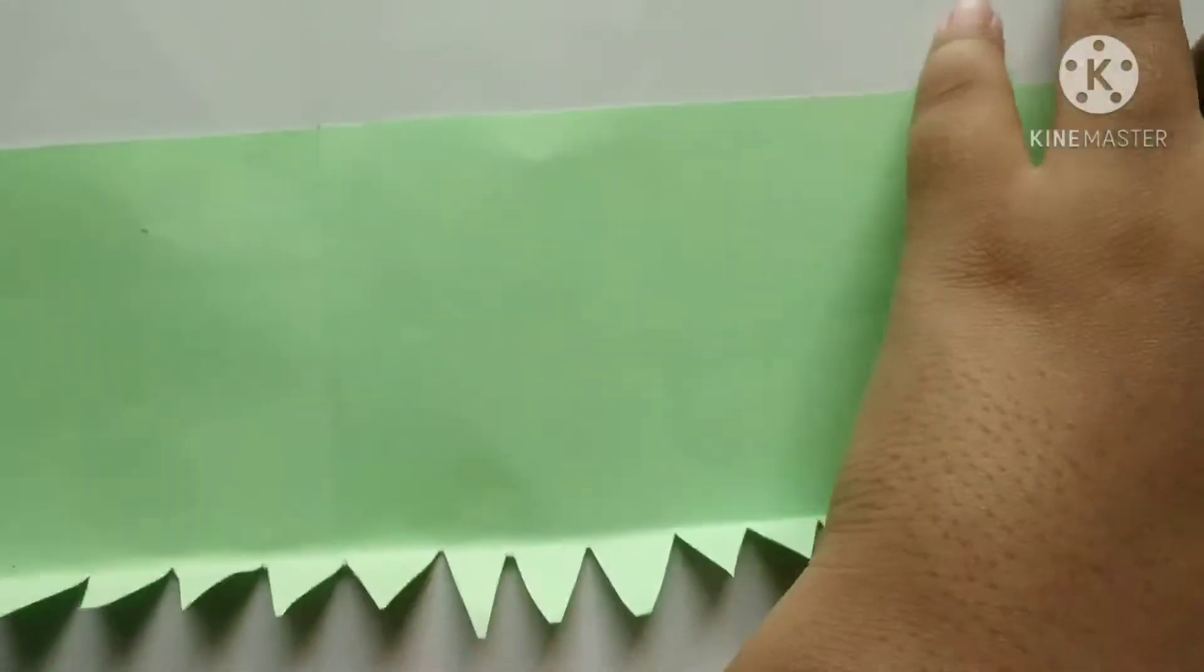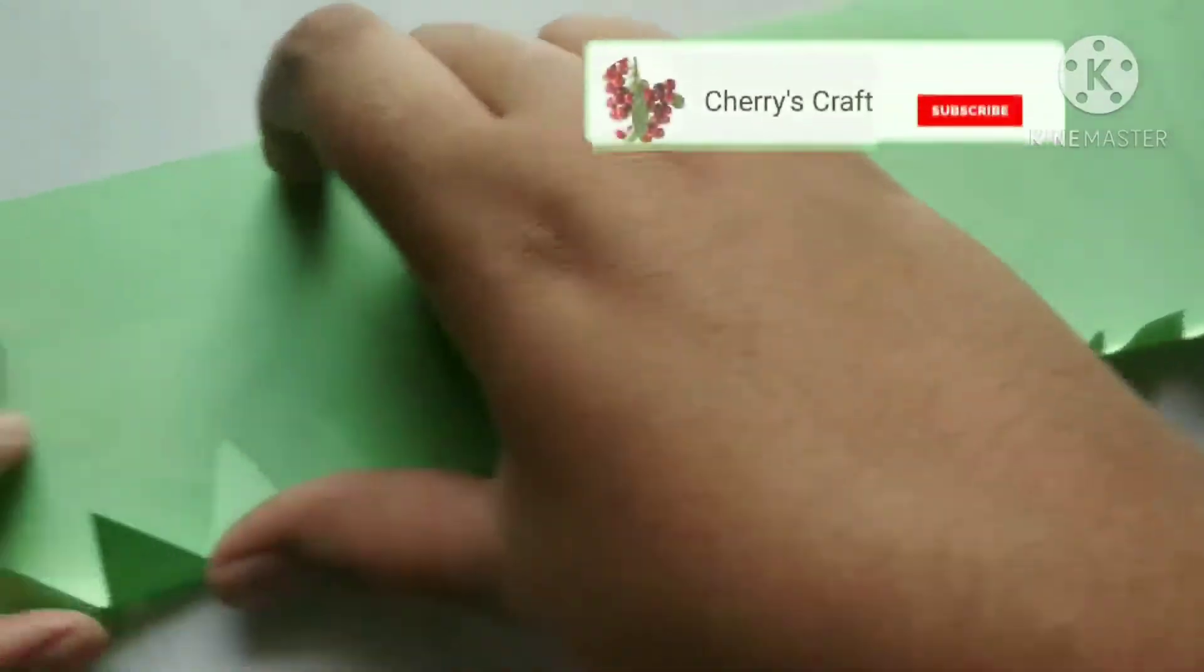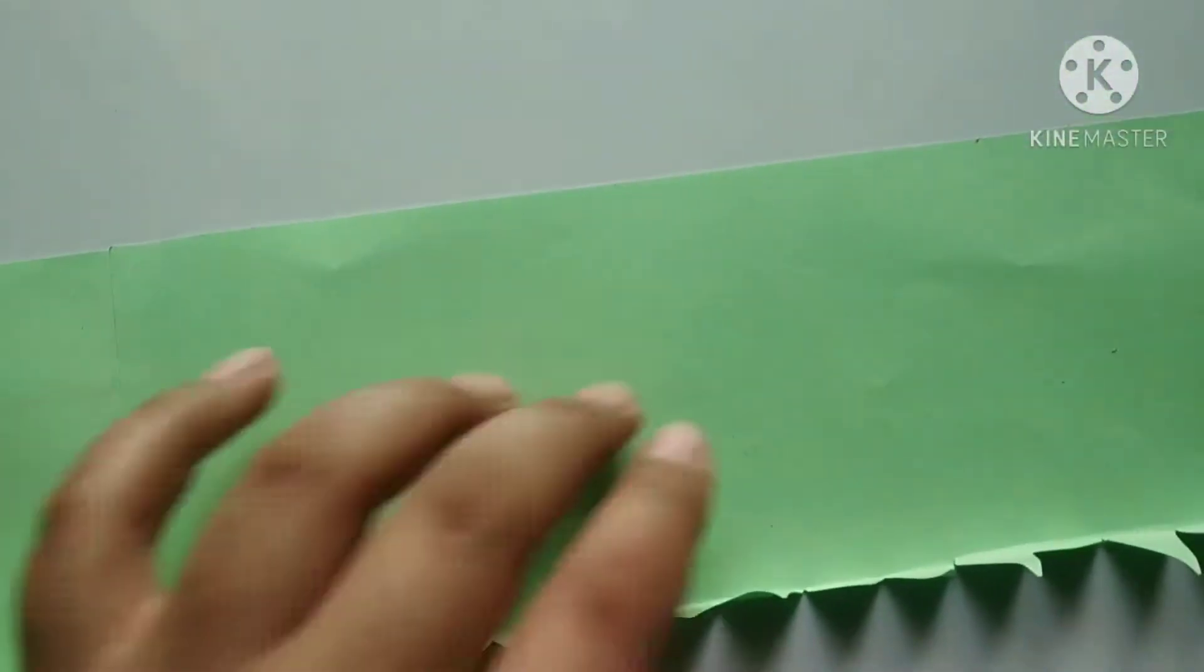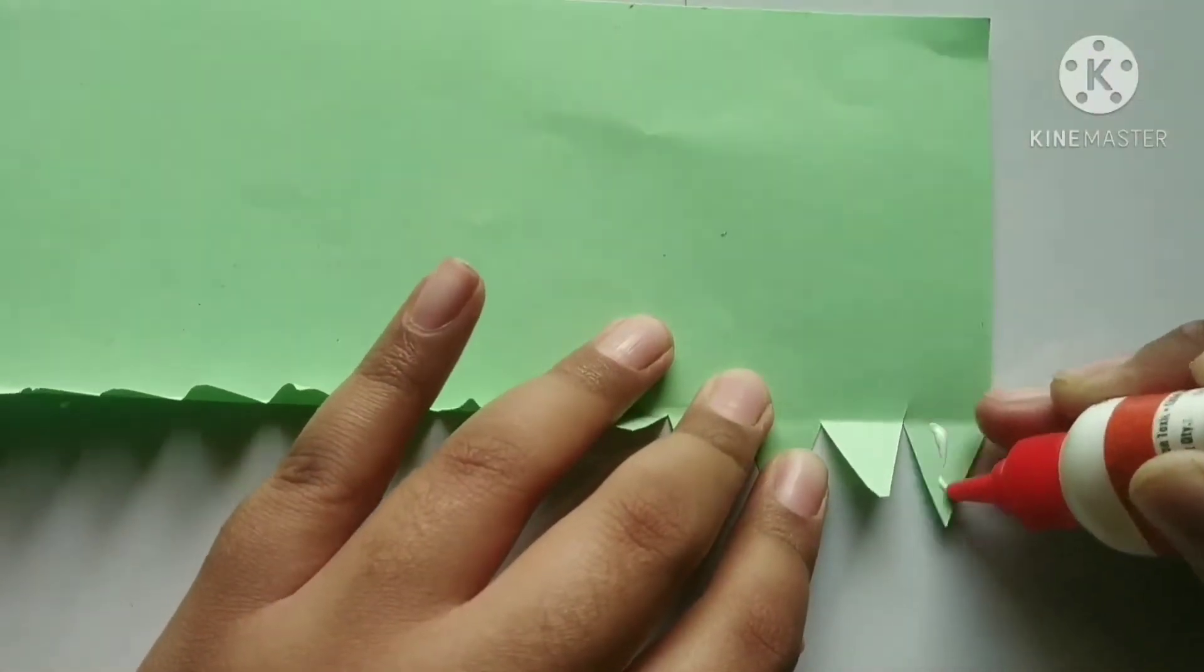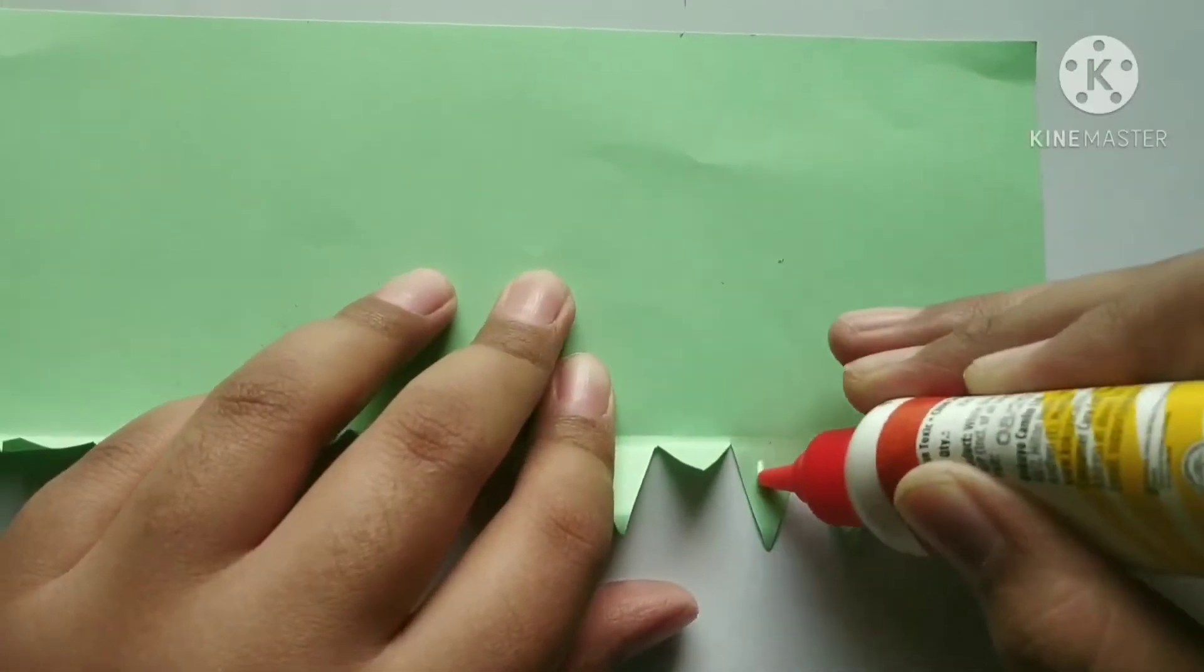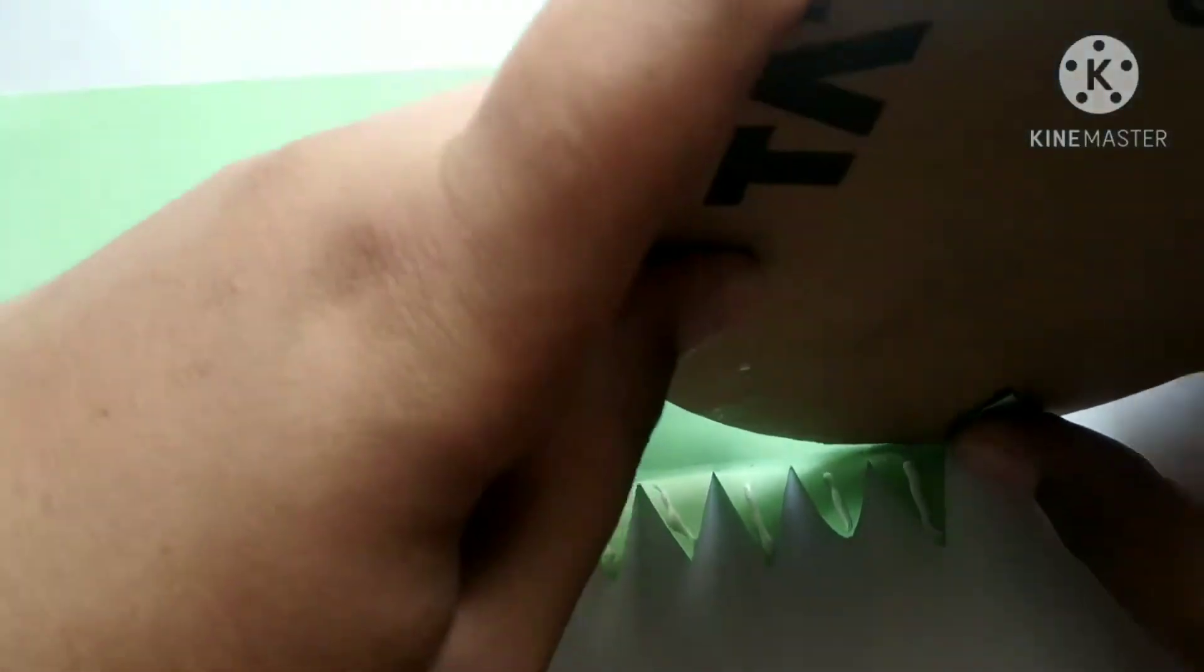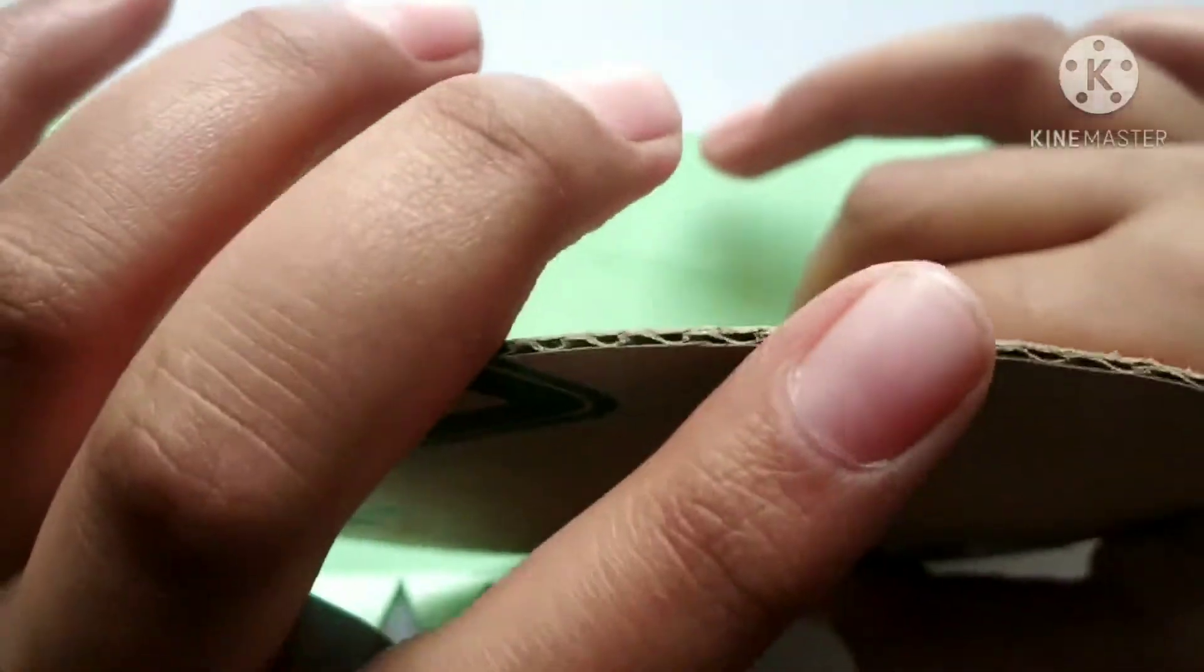Friends, now we need to fold this up and keep them straight. Now we need to apply glue. After applying glue, we need to press and roll. Press and roll. We need to do this process all the way around.